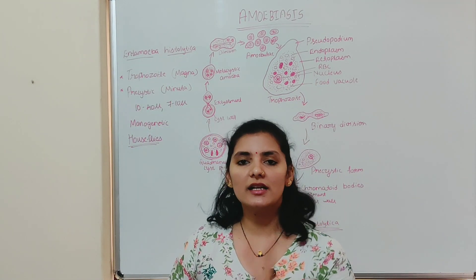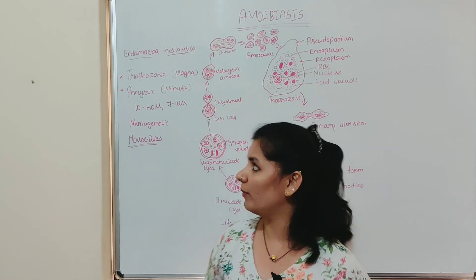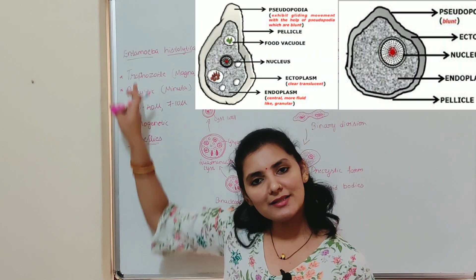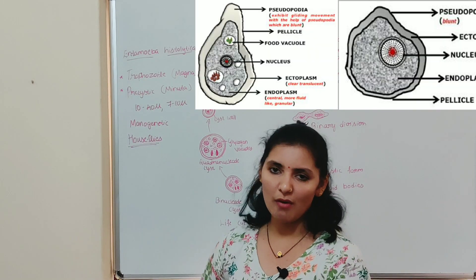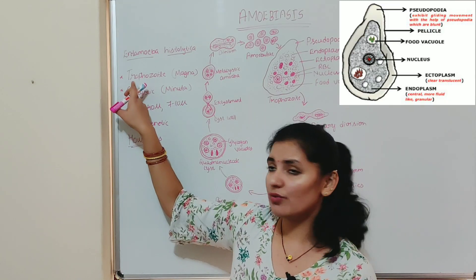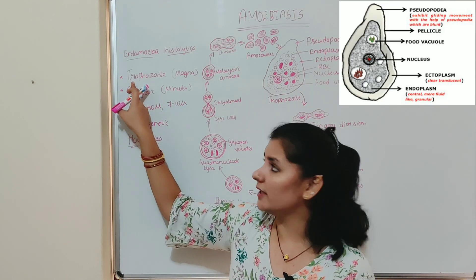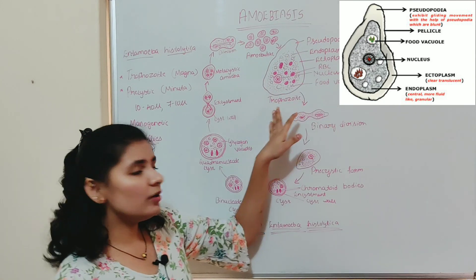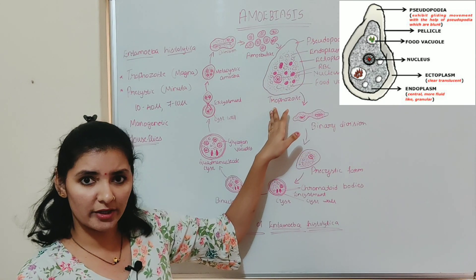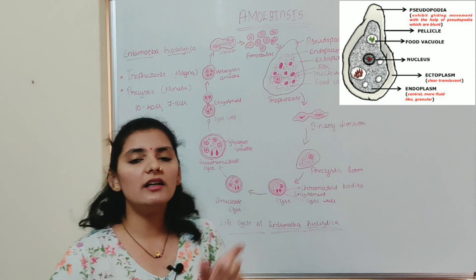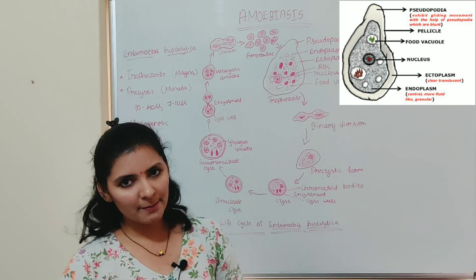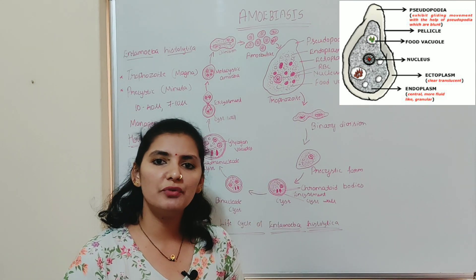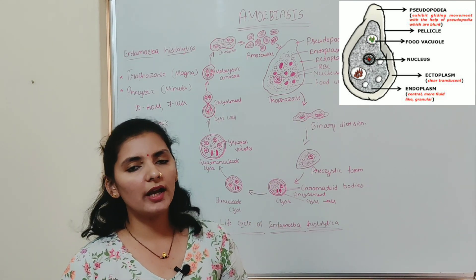Entamoeba histolytica mainly occurs in two forms: the trophozoite form and the precystic form. The first is the trophozoite form, also called the magna form. This is a diagram of a trophozoite. The trophozoite is the adult form of the parasite — it is active, feeding, motile, and pathogenic to humans.